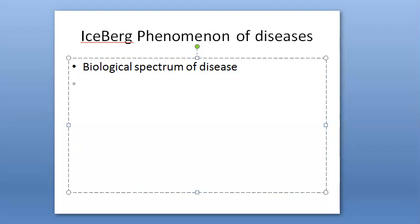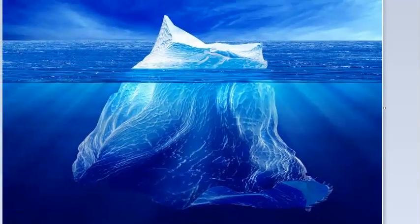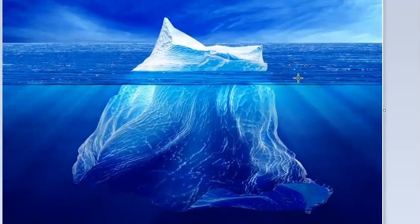According to this concept, disease in a community can be compared with an iceberg. In an iceberg, only a small portion is outside and the major chunk is inside. A very small portion of the iceberg is visible above the water surface and its large part is submerged below the water surface and hence not visible.